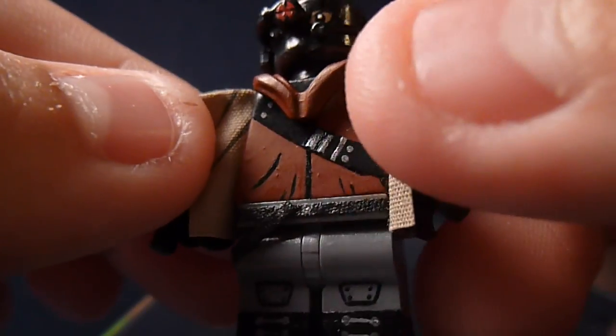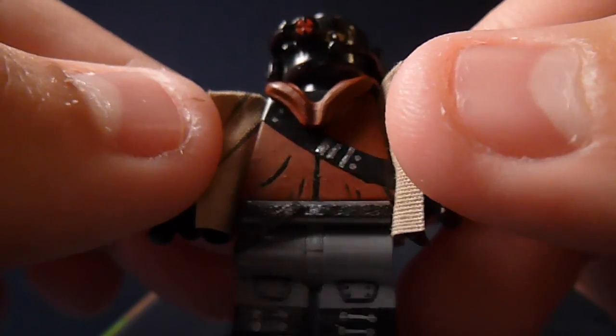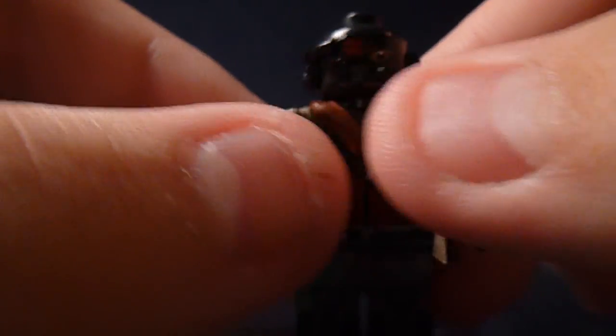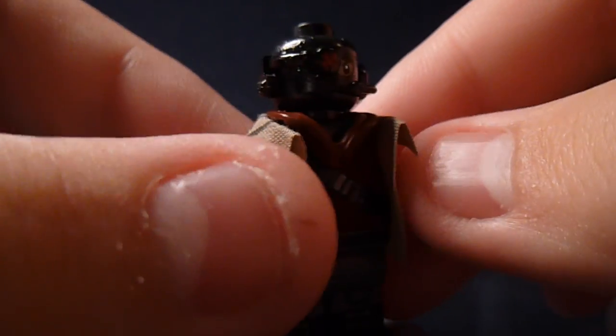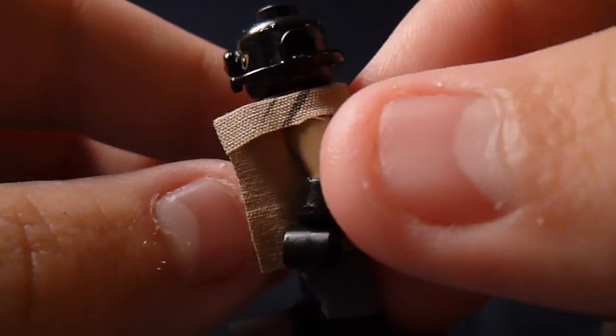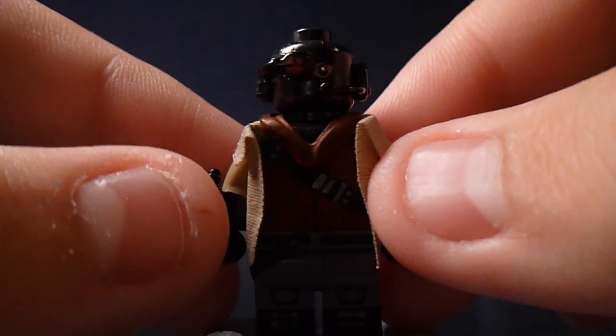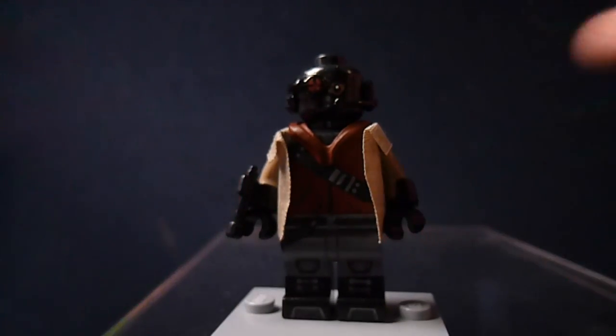His torso is painted by me, and he has a strap out of electrical tape. The hood is a modded Lego hood that I cut the hood off of and glued it on there. His eyepiece is from a brick arms frag grenade and his headset is from minifig cat, I believe. So yeah, that's it for Deadshot.